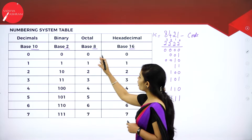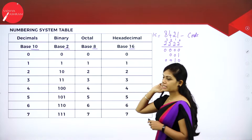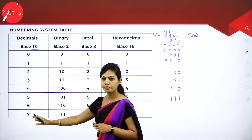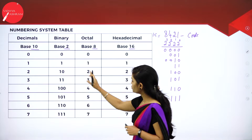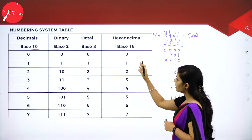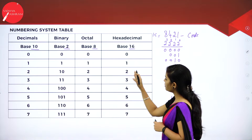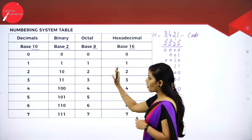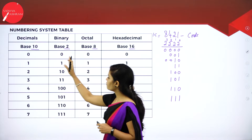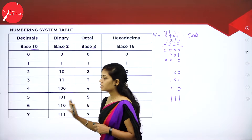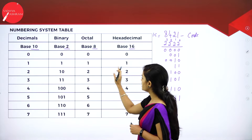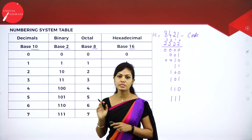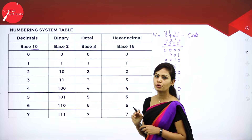Here we have octal and hexadecimal. In octal we have the same digits 0 to 7, and in hexadecimal we also have digits 0 to 7 among others. For all these digits the binary value should be the same. Using these digits we can find the binary values easily using 8421 code.